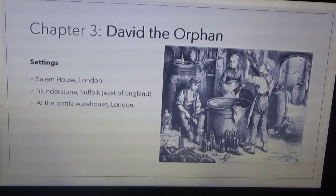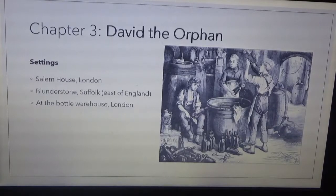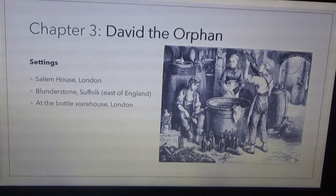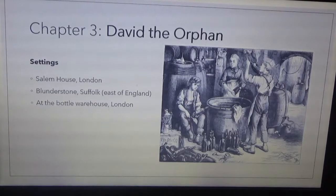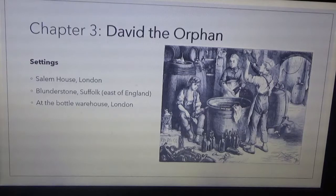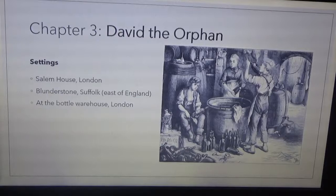The settings are at Salem House in London, Blunderstone, Suffolk, East of England, and at the Bottle Warehouse in London. This is the Bottle Warehouse in London — it's part of the warehouse and you will see David sitting there, seemingly sad and tired. Let's see what happens in Chapter 3, but before that let's continue with the other story elements which we may extract from Chapter 3.